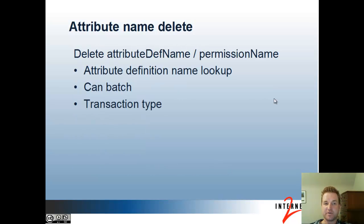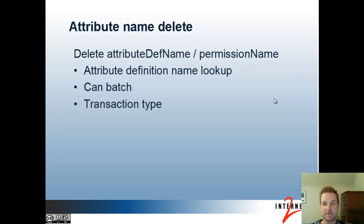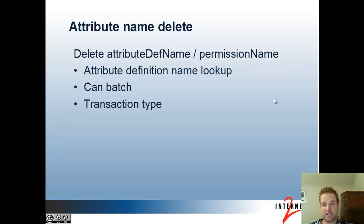Attribute Name Delete web service operation deletes an attribute definition name. A permission name is the same as an attribute definition name — it's a special type of it. You pass in the attribute definition name lookup, which is either the attribute definition name or UUID, and it deletes it. You can batch multiple deletes to send them at the same time, with a transaction type specifying whether they should operate inside a transaction.